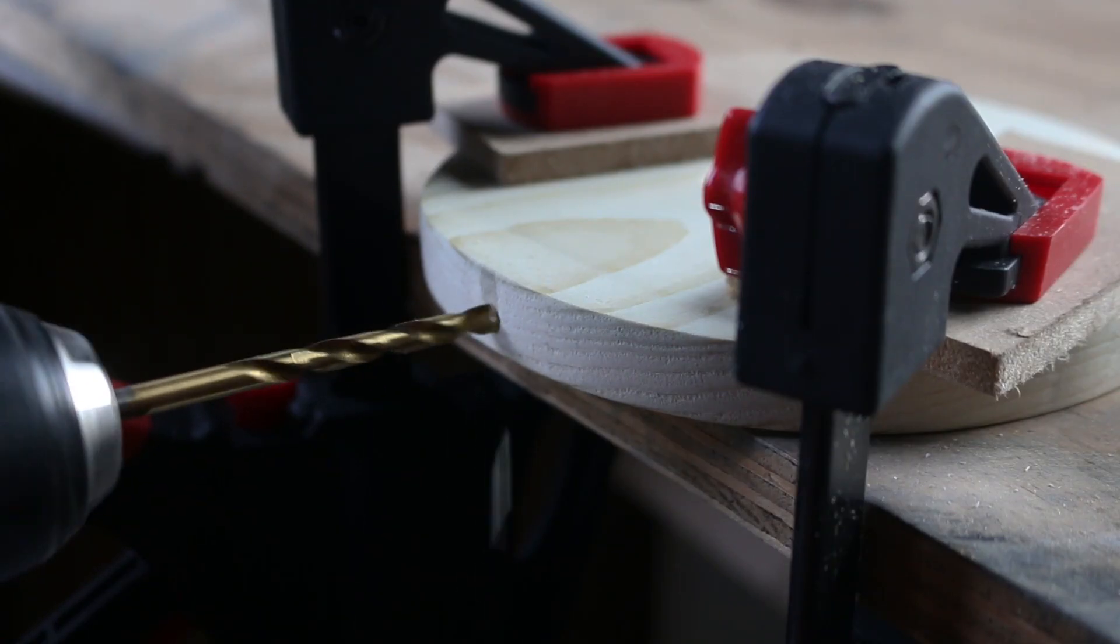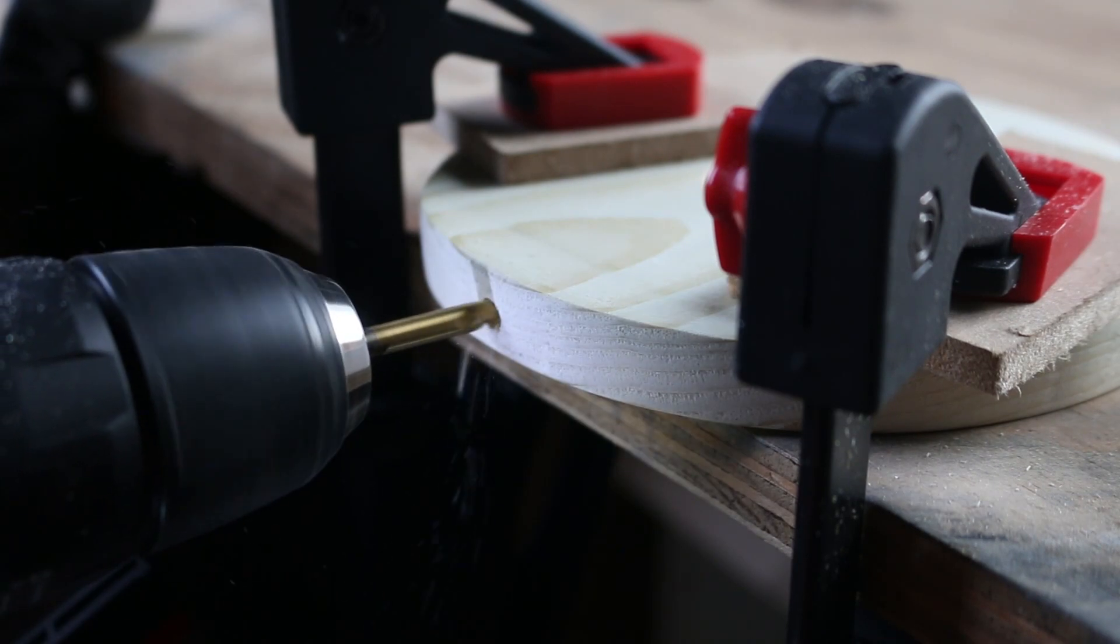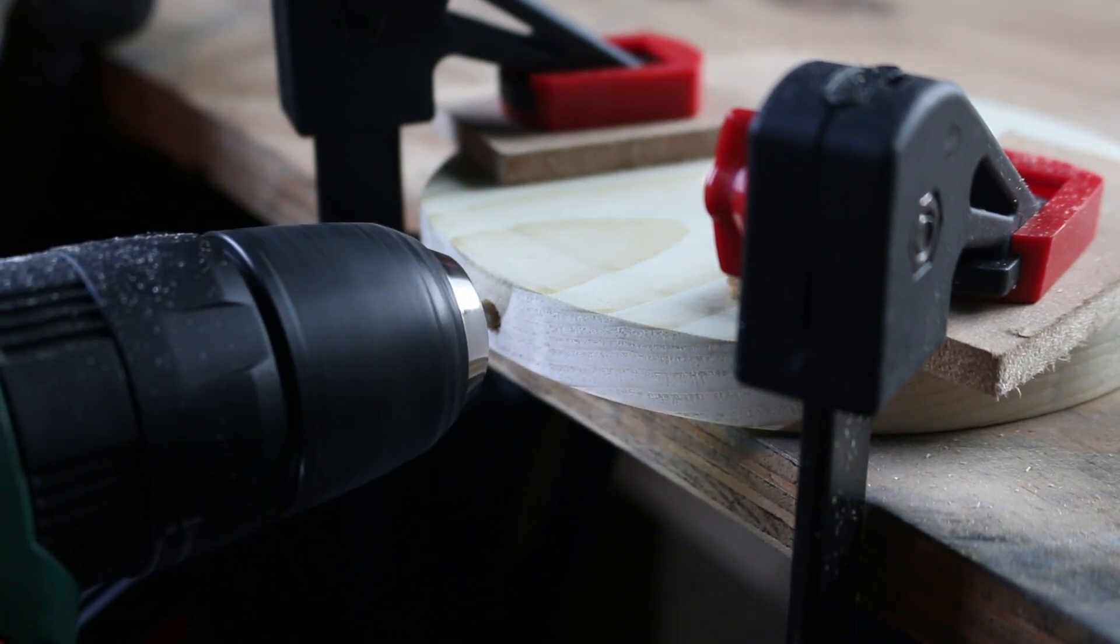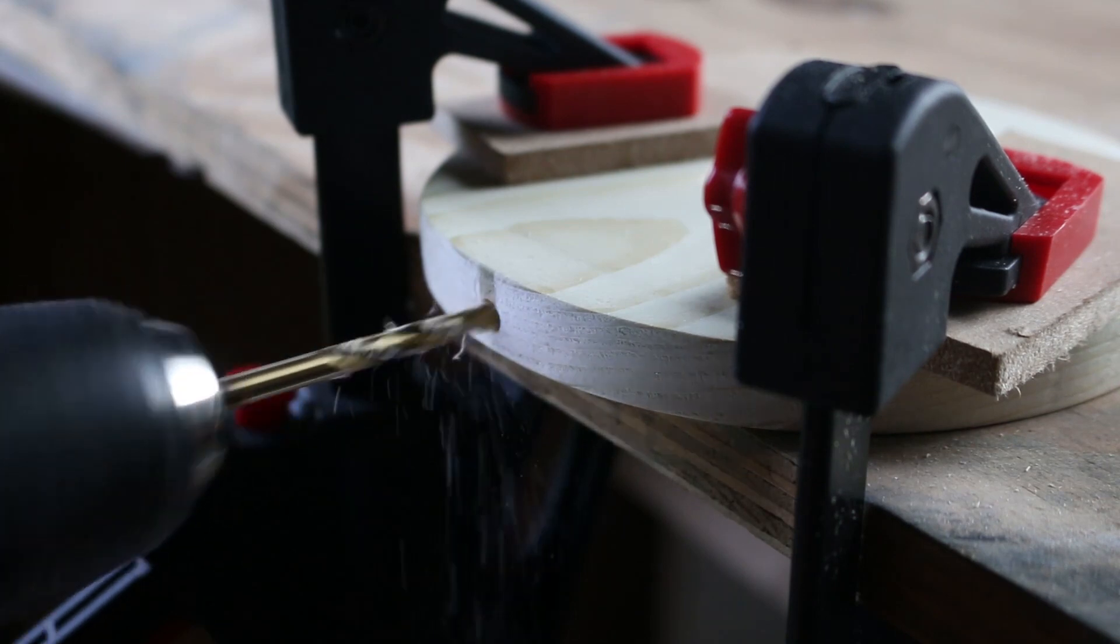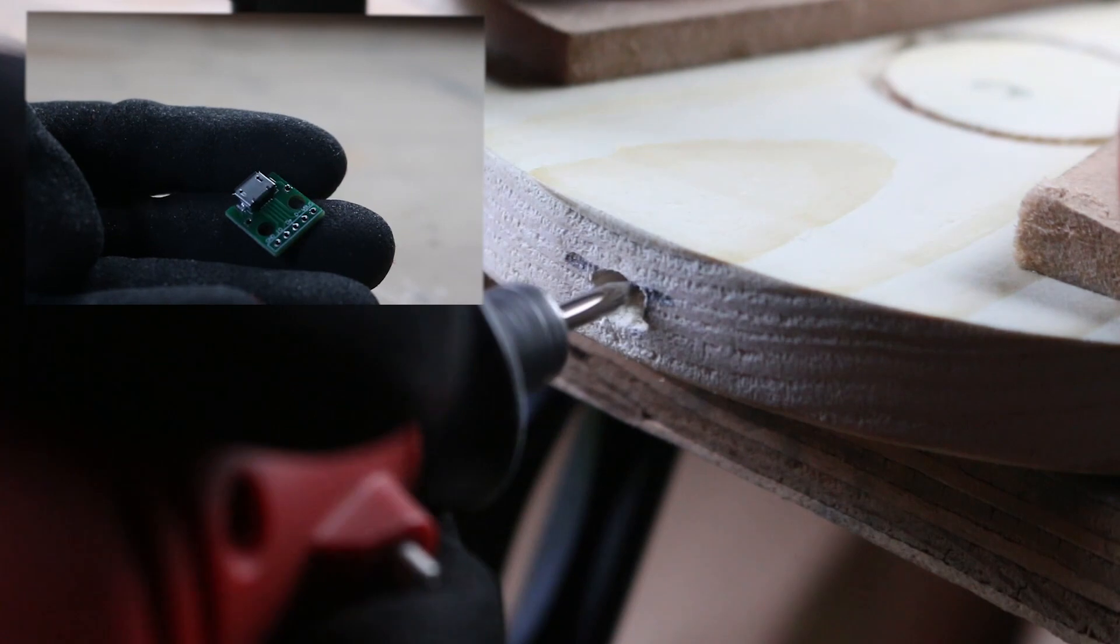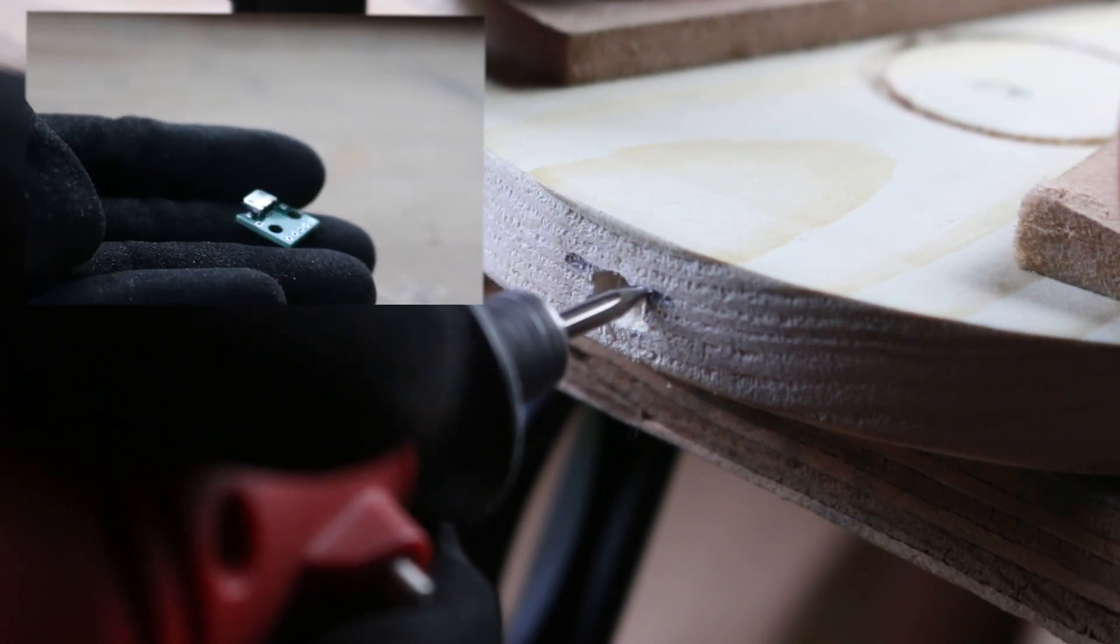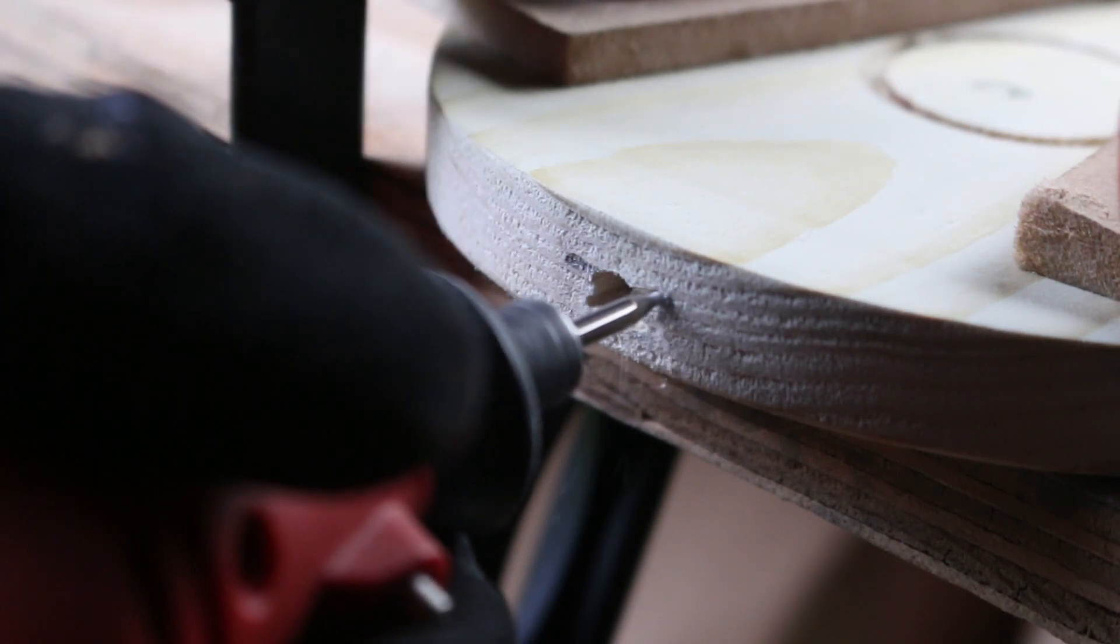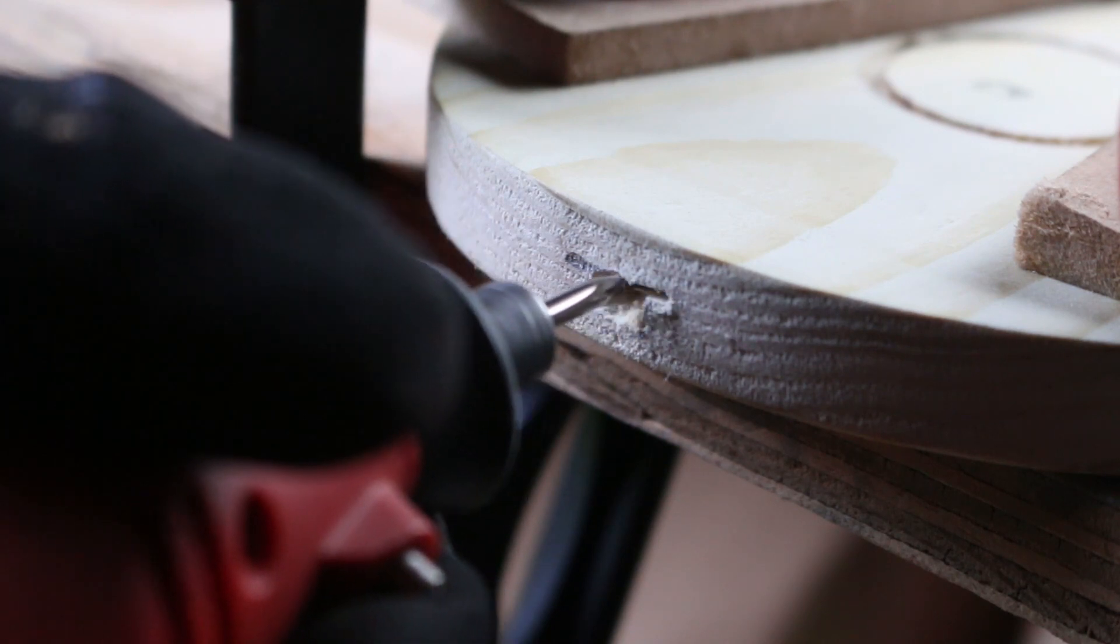Okay, so the amount of current my electronics would require is more than cheap batteries can handle, so I'll be plugging this thing into the wall. And I'll be borrowing my phone charger for this. It's a micro USB plug, so I bought this breakout board, which will fit snugly in the hole once I'm done here. And you can find a link to one of those and all of the other supplies in the video description.